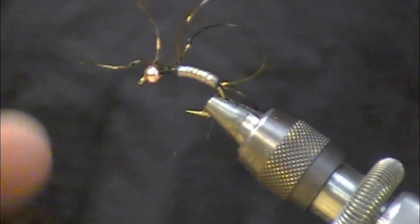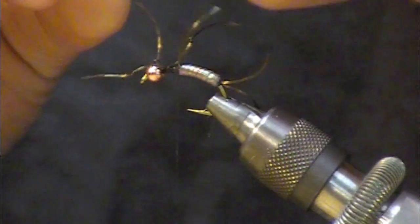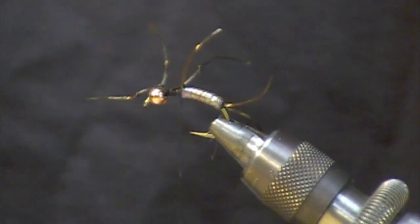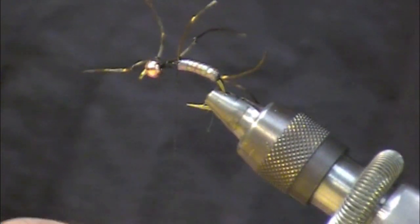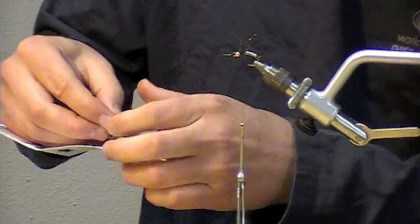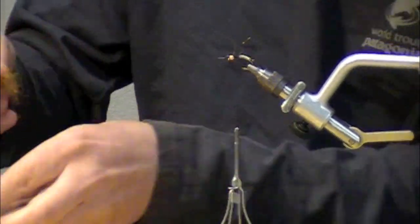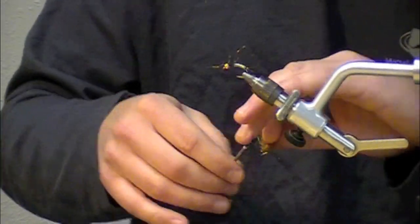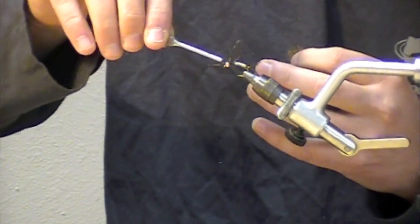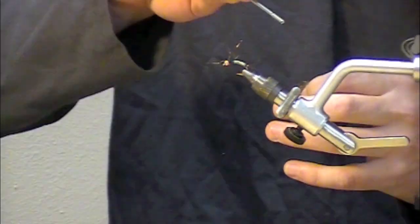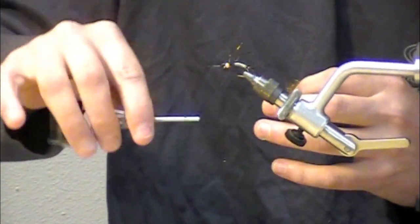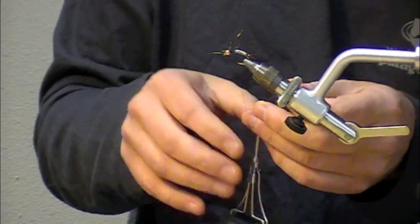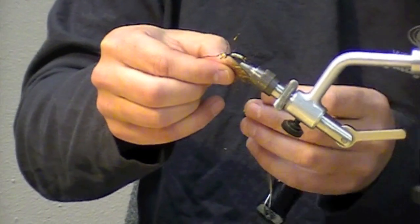I'm going to bring my thread back to where the thorax starts, abdomen finishes. And I'm going to use some of this Golden Stone SLF. I'm going to pull out a small pinch and put this into a dubbing loop. If you've got a whirligig tool that you like using, go ahead and do that accordingly. I'm using that Pettit Jean bobbin again.